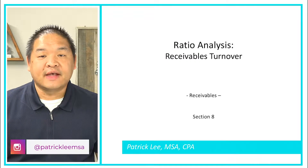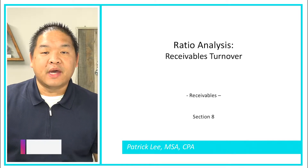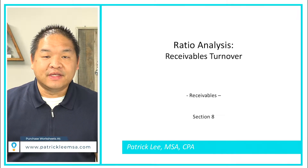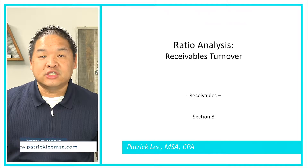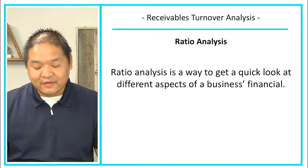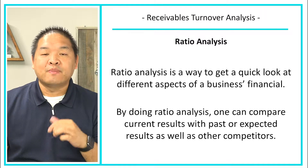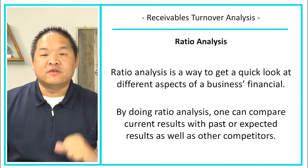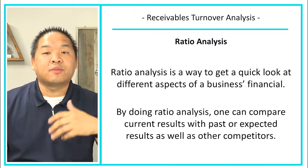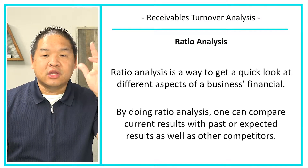In this last lesson we're going to look at some ratio analysis, specifically on receivables, and how we can use this information to help us better understand whether or not we're efficiently collecting our receivables. We're going to be looking at the receivables turnover ratio. Ratio analysis is a great way to get a quick look at different aspects of a business's financials. It also allows us to compare current results with past results — if we turn it into a ratio or percentage it makes it easier to compare two periods, even if one year it grows and another year it shrinks.